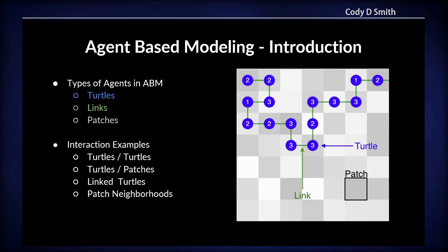These are the primitives of agent-based modeling. We have turtles — shown in blue — which are little things that can move around in the world. They have a position, sometimes velocity. There are links that connect two turtles. Together, in GIS terms, you could consider those a vector — like a point in a line or maybe a polygon. Then you have patches, which are the raster underneath — that's in gray. You can have multiple values per patch, but it's basically a raster.